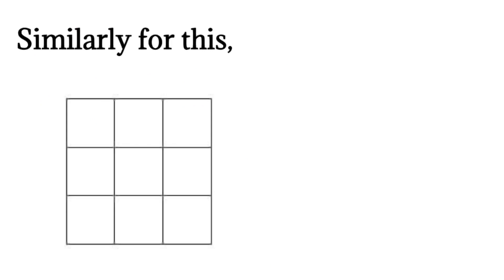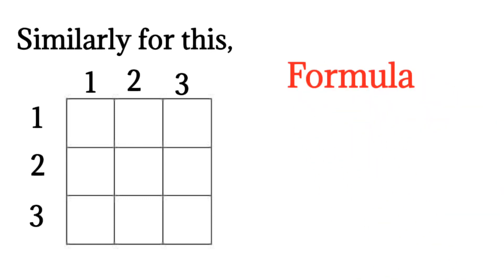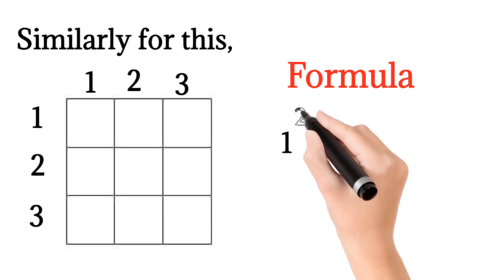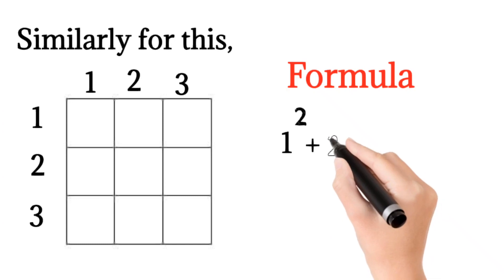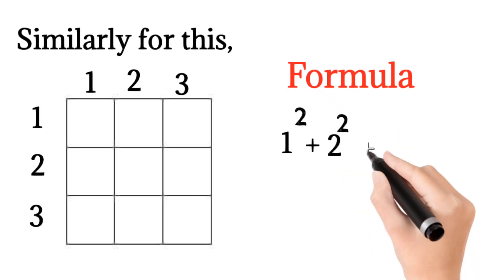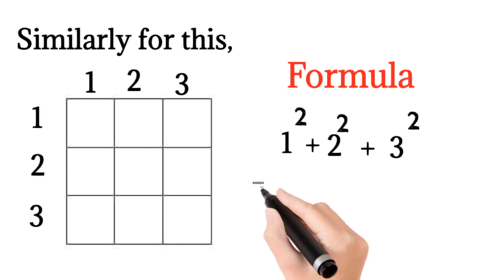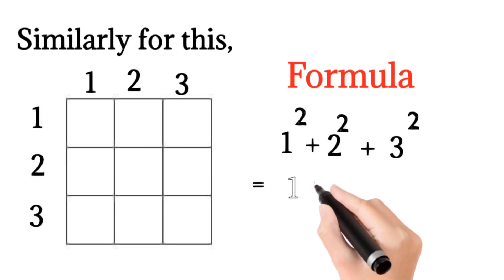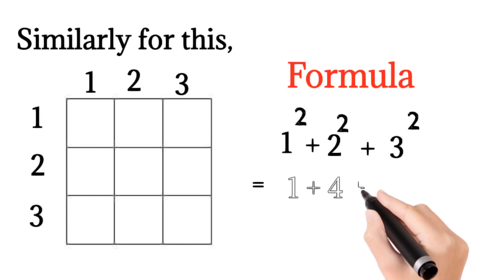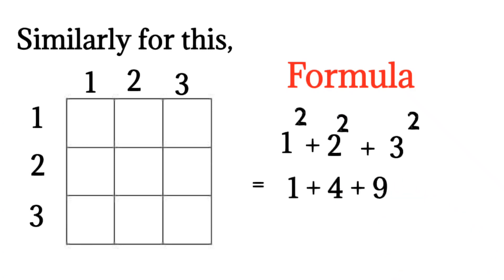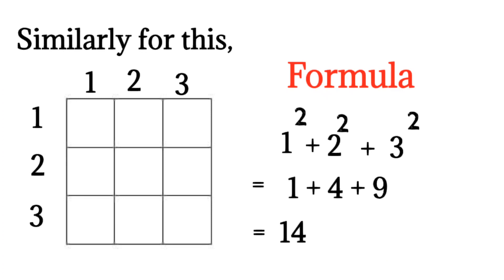Similar to that, consider this figure, which has 3 rows and 3 columns. The formula for this is 1² plus 2² plus 3². If you calculate this: 1² is 1, plus 2² is 4, plus 3² is 9. If you sum these, you will get 14. So the number of squares in this figure is 14.